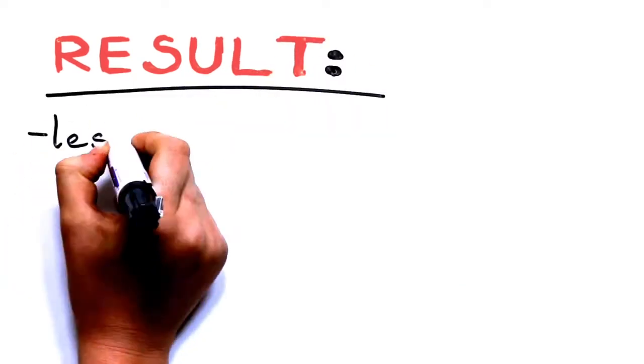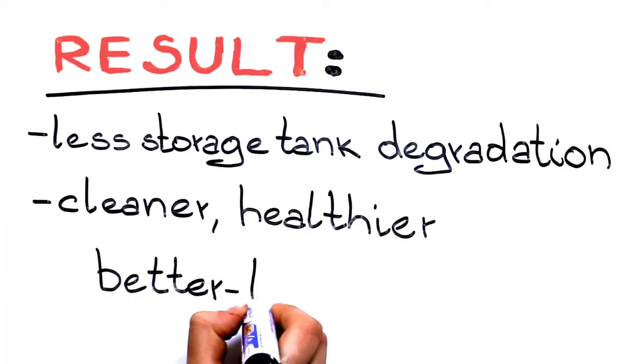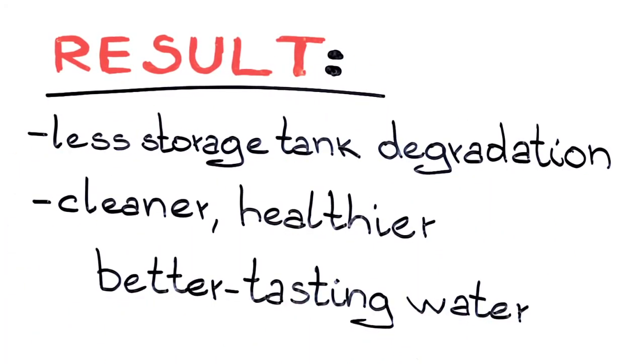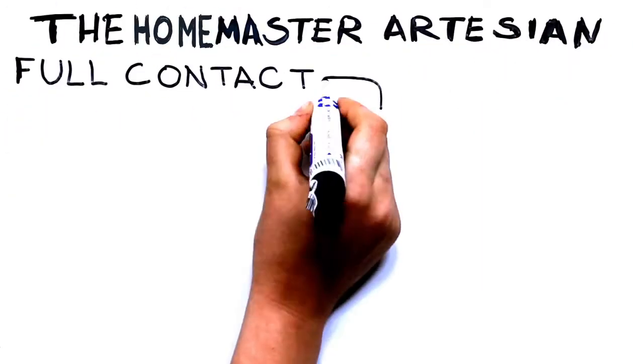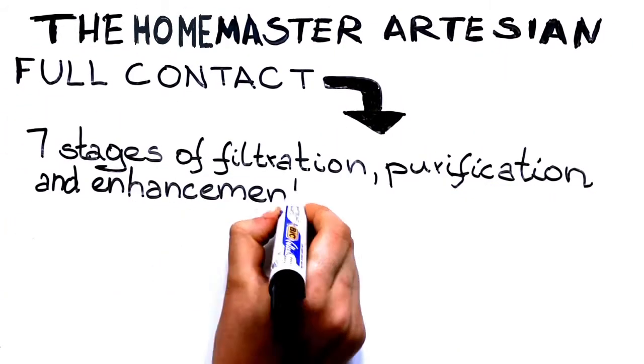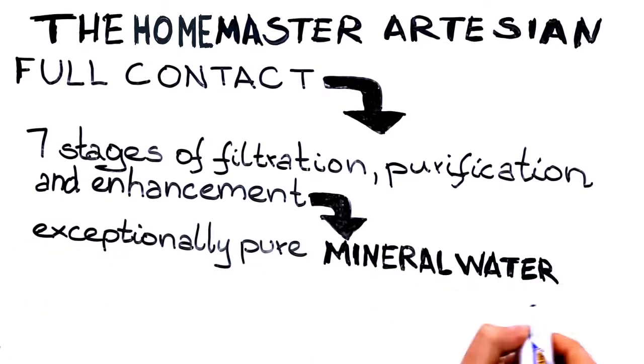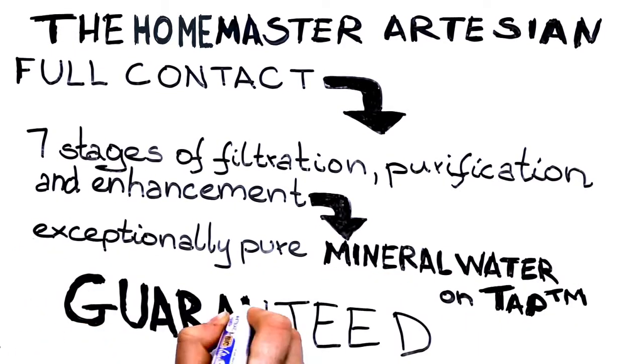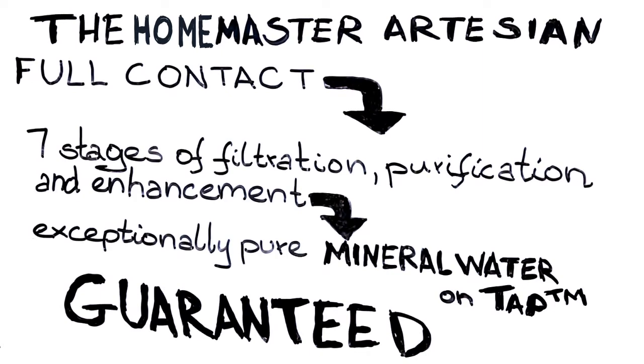The results are less storage tank degradation and cleaner, healthier, better-tasting water that is slightly alkaline. With seven stages of filtration, purification, and enhancement, the Home Master Artesian Full Contact produces exceptionally pure mineral water on tap. Guaranteed, or your money back.